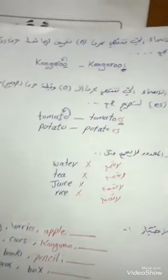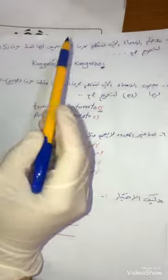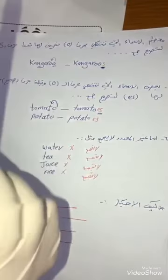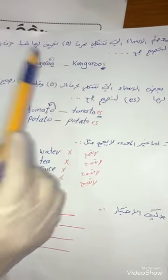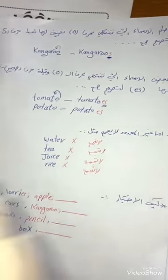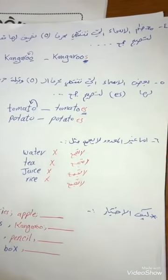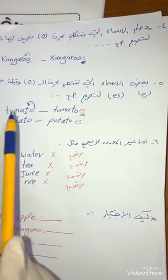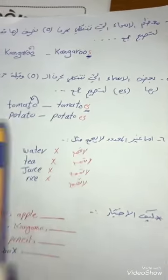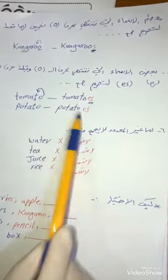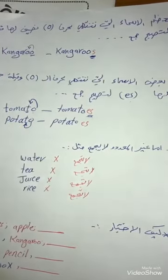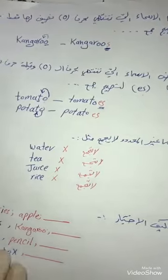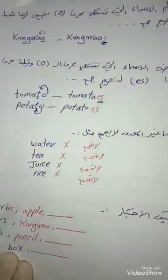معظم الأسماء التي تنتهي بحرف O نضيف لها فقط S. يعني باش منتهي بحرف O - أوكي - نضيف لها بس S. يعني معظم الأسماء - مو كل الأسماء - معظمها المنتهية بحرف O نضيف لها فقط S لتصبح جمع. For example: kangaroo - kangaroos.